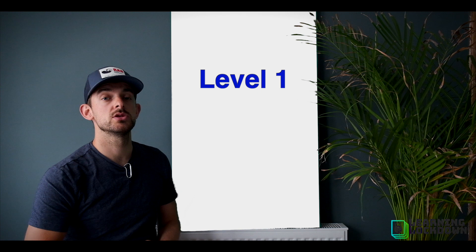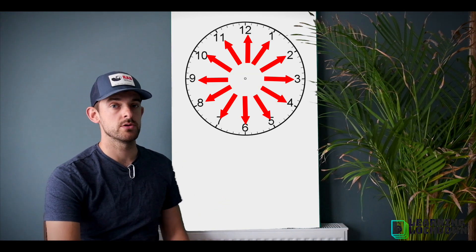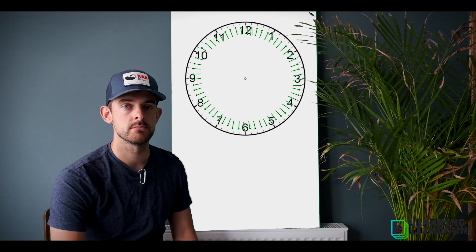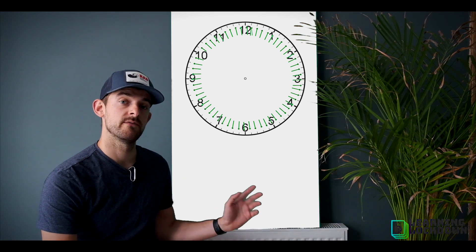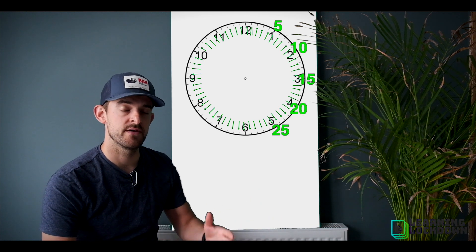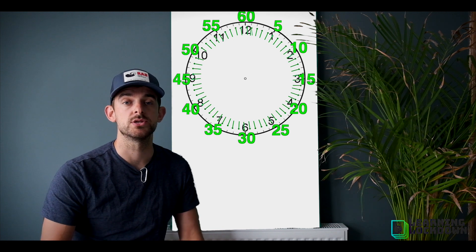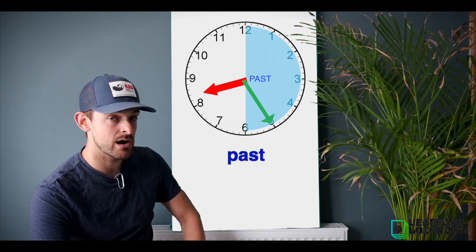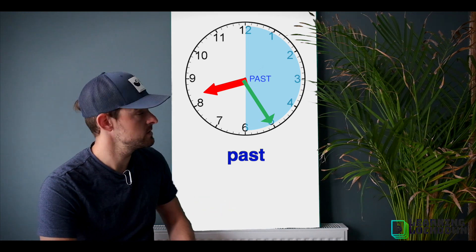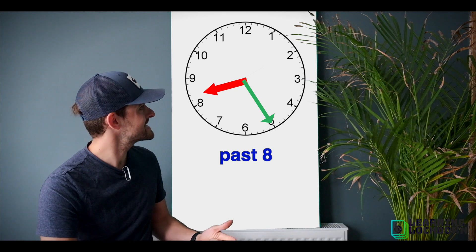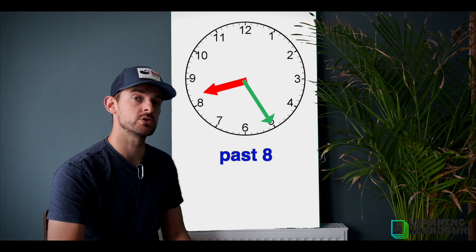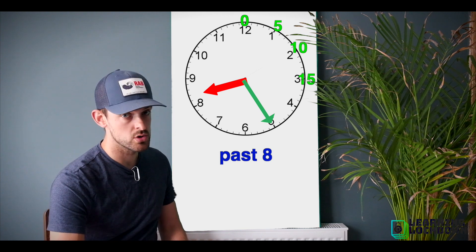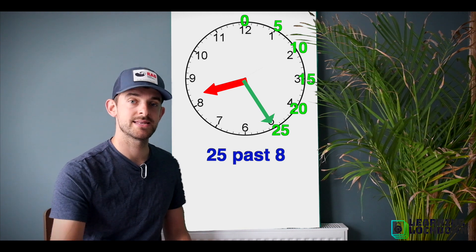Level one is a nice recap on stuff we were doing last week. We have our 12 hours on the clock but we also have the tiny scale, which is our minute scale. Behind the big hour numbers, those are five minutes. So as we go around the clock it's 5, 10, 15, 20, 25, and so on in minutes. Look at the time on the board — step one: look at if it's past or to. This one is past eight o'clock, so it's past eight.